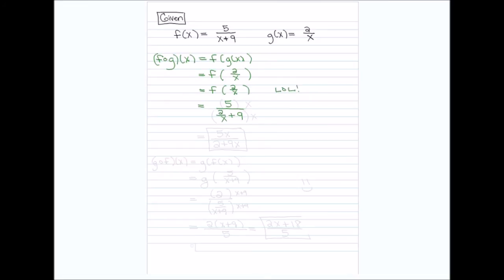I don't want to leave this as a complex fraction, so I'm going to multiply the top and bottom by the LCD. Looking at the fractions in the denominator, the LCD is X. I multiply the top and bottom by X: at the top that gives me 5X; at the bottom the X in (two over X) cancels out giving me 2, and nine times X gives 9X. So the final answer is 5X over (2 plus 9X).